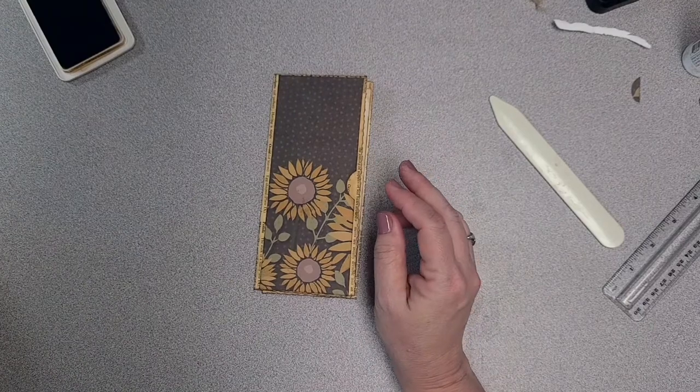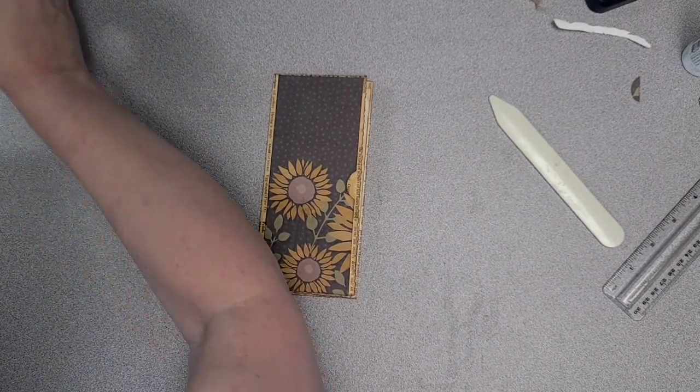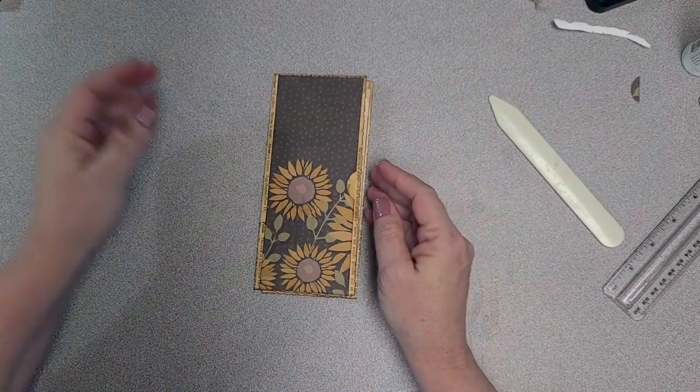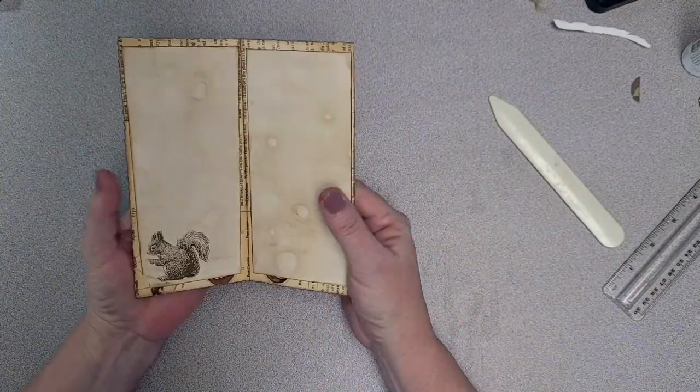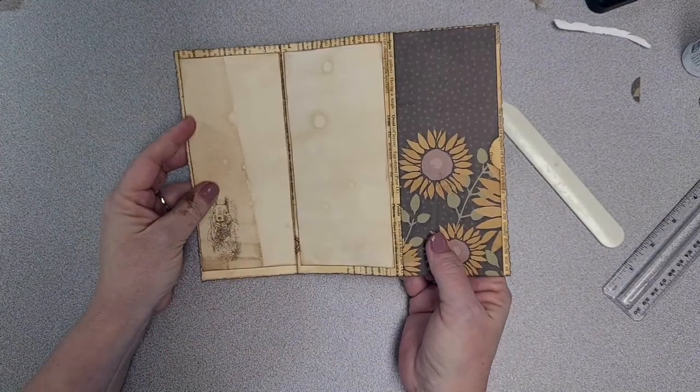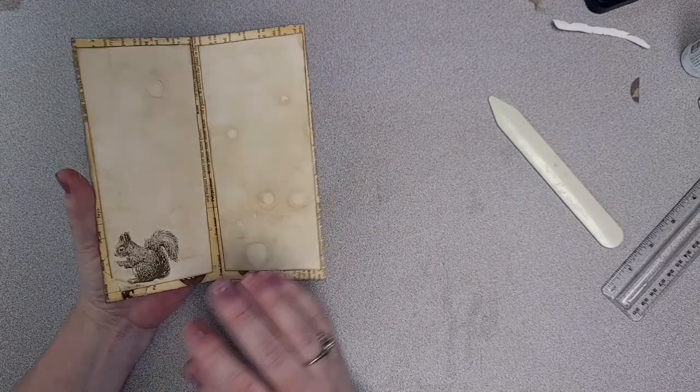Very simply, that is my torn book page pocket number two. It's a double pocket and journaling space.